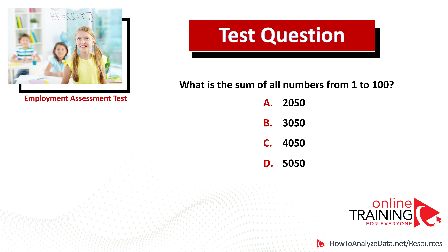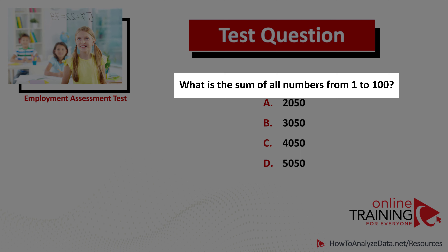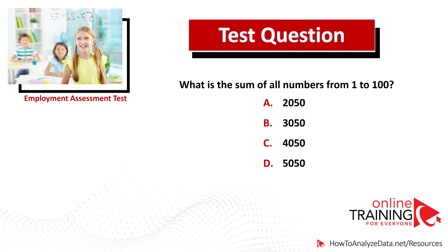Let's look at a simple but very tricky question you might frequently see on the Employment Assessment Test. What is the sum of all numbers from 1 to 100? You have four choices: A) 2,050; B) 3,050; C) 4,050; and D) 5,050. Obviously you can use a calculator if allowed, but you might run out of time. There is a better solution.